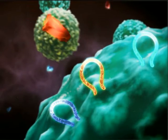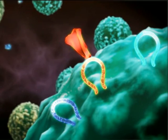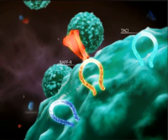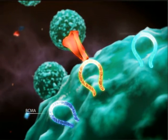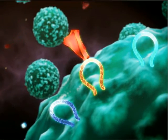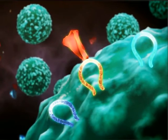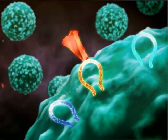BLyS and APRIL bind to a complex system of receptors known as BAFF-R, TACI, and BCMA. Targeting one or more of these ligand receptor pathways can have varying effects on B-cell and plasma cell maturation, function, and survival.